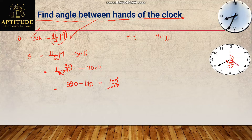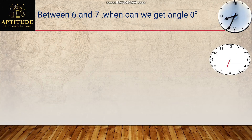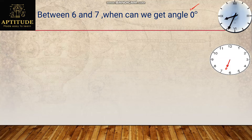Another category: between 6 o'clock and 7 o'clock, when can we get zero degrees? Zero degrees means both the minutes hand and hours hand lie on the same line. The hours hand will be between 6 and 7, and the minutes hand should also be there. We can't manually tell the exact time — it might be around 32, 33, or 34 minutes.